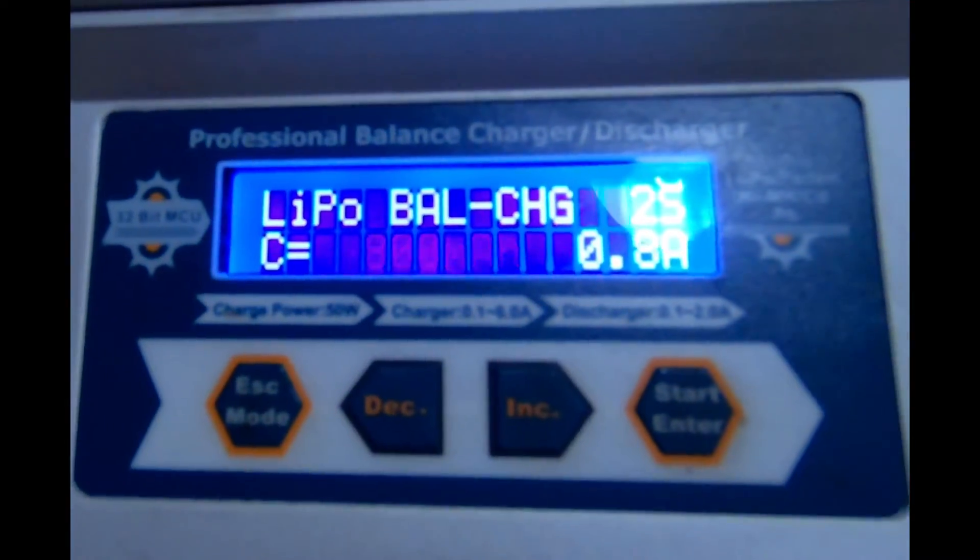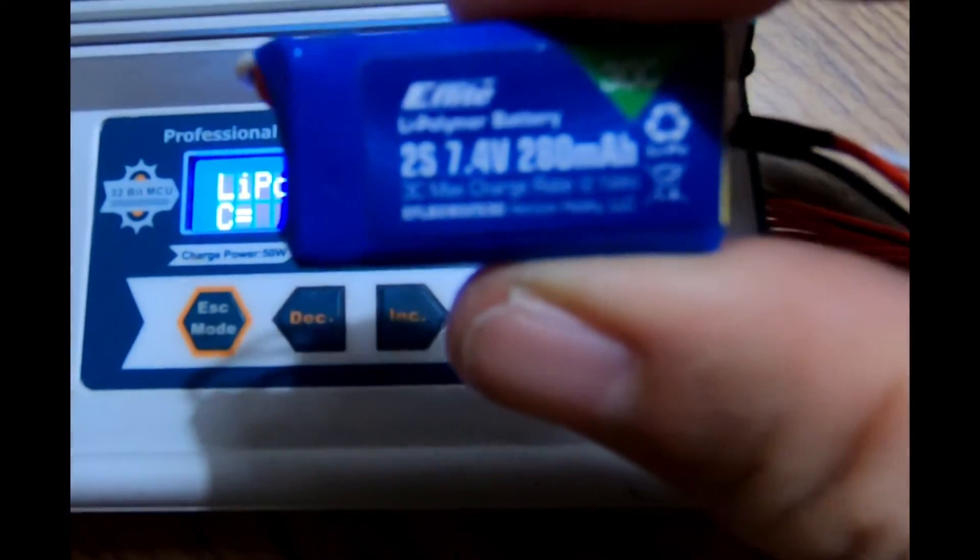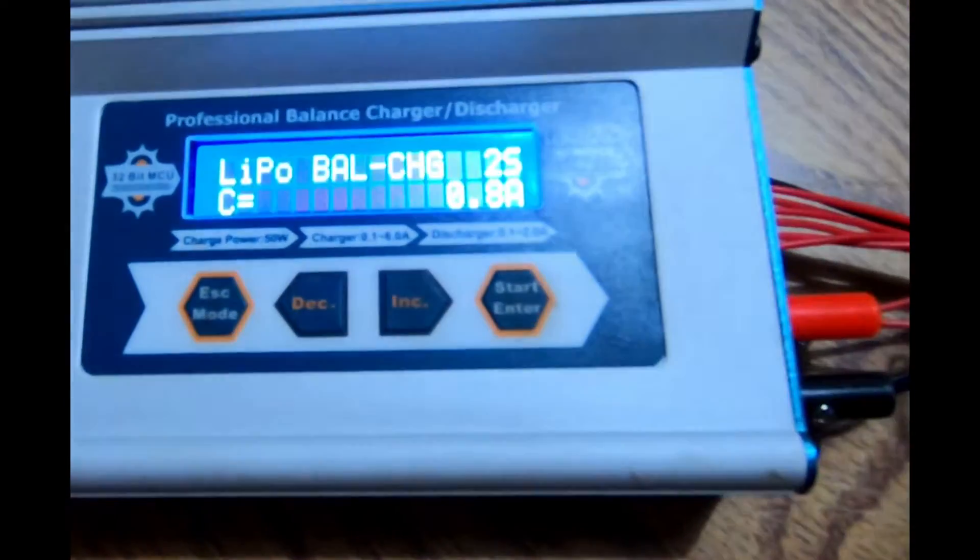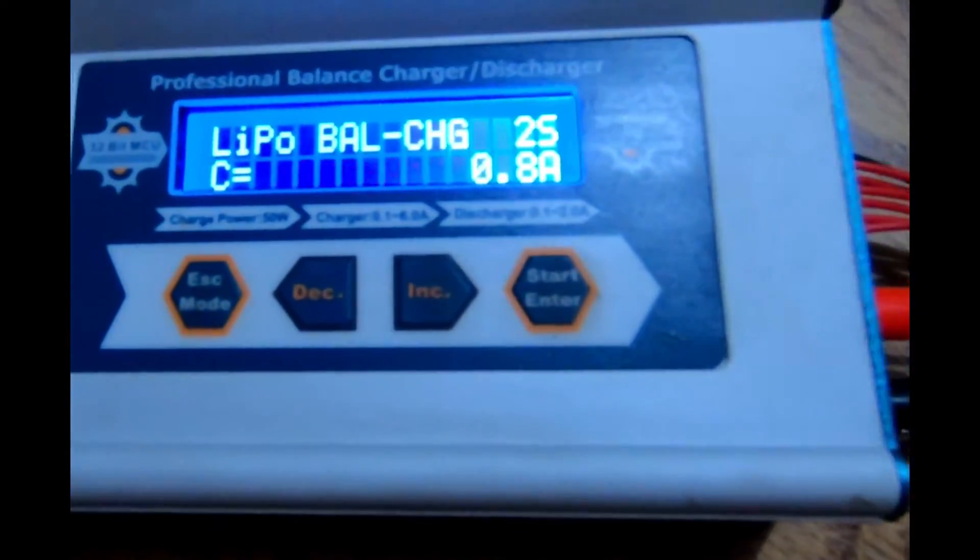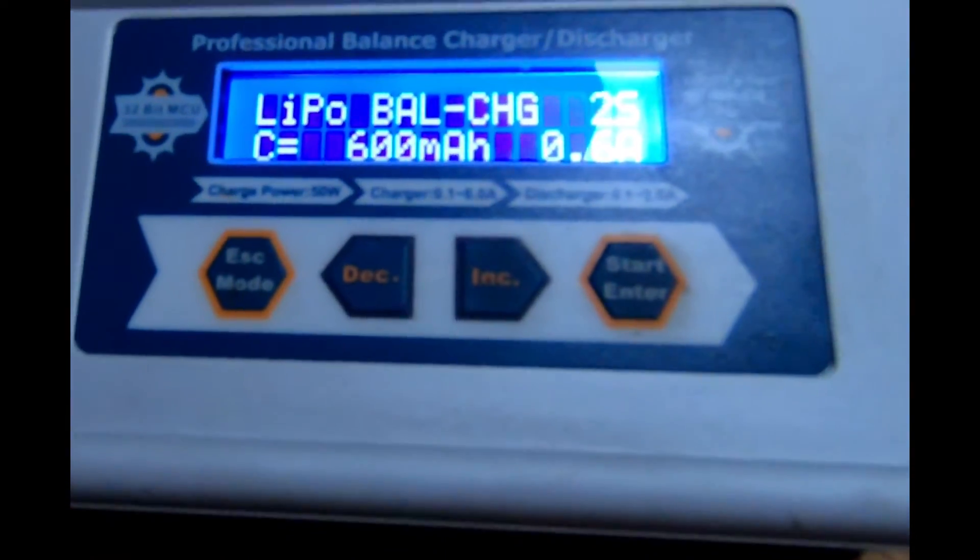On the C rating, we're going to do it two times the charge rate of the battery, or the milliamp. So the battery pack, as you know, is a 280, so we're going to get that as close as we can. So we're going to make that 600 milliamps.